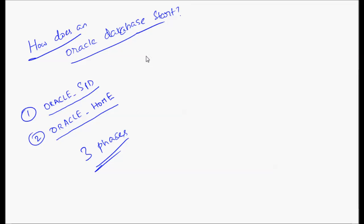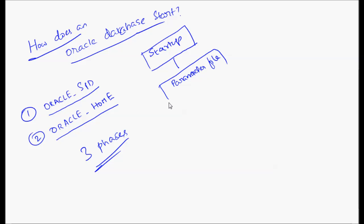So the process is like this. We issue the startup command. Once the startup command has been issued, it looks for the parameter file. That's the first step the startup process looks for. Just remember the sequence — when you start it up, the first thing it's going to look for is the parameter file.